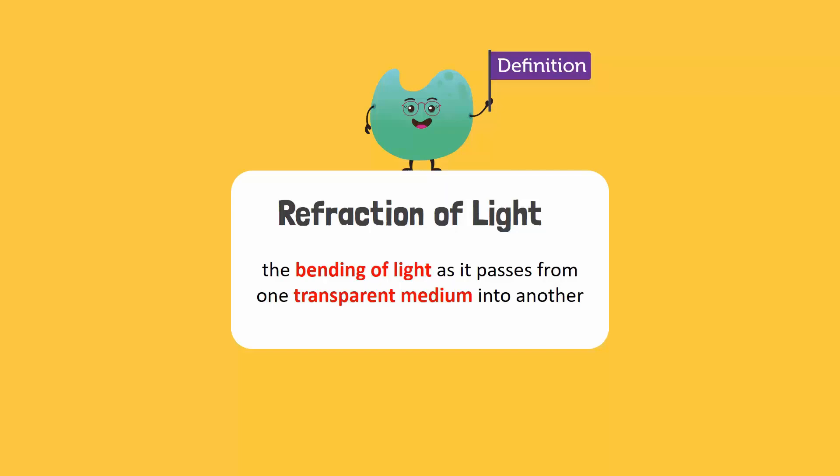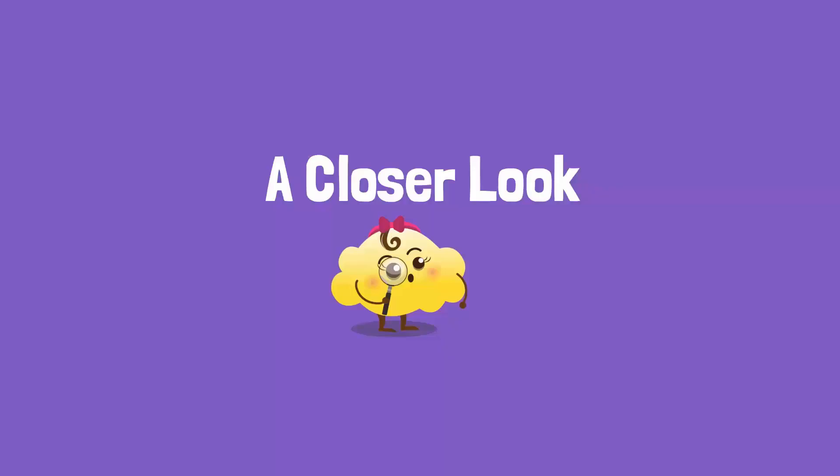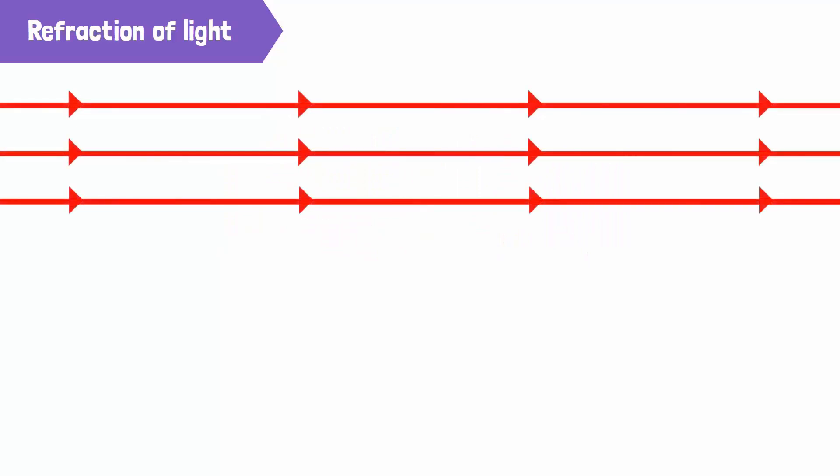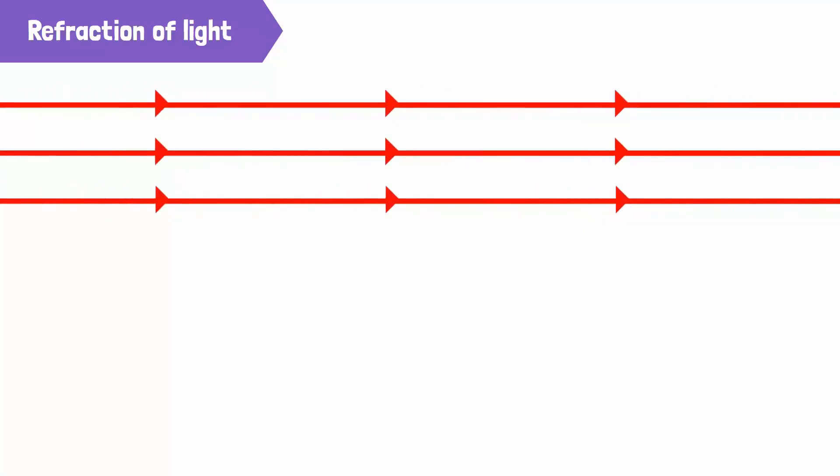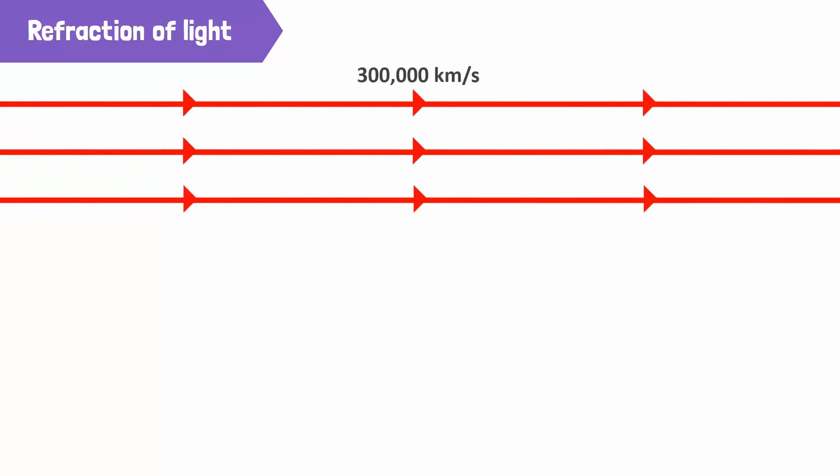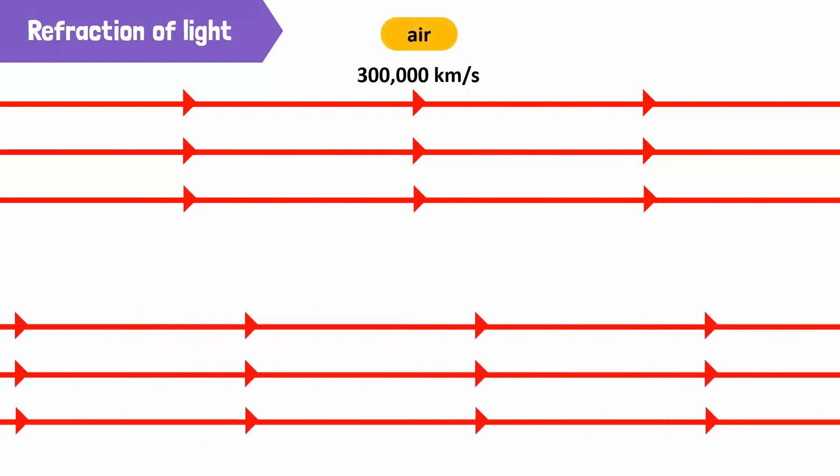So why does this happen? Let's take a closer look. Let's represent the rays of light through these lines. Light travels at almost 300,000 km per second in air, but it slows down when it enters a different transparent substance or medium like water.